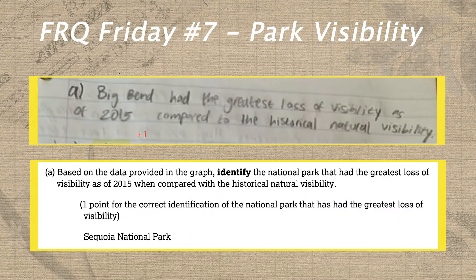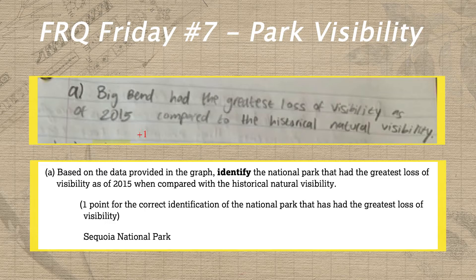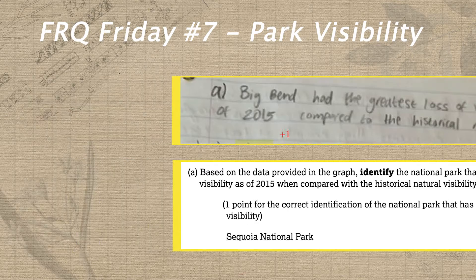In letter A, Hannah unfortunately misidentified Big Bend as the park that had the greatest loss of visibility, instead of Sequoia National Park. Unlike the low visibility in Sequoia National Park, I had no trouble finding all the points in Hannah's response for part B.